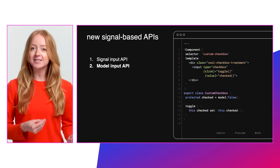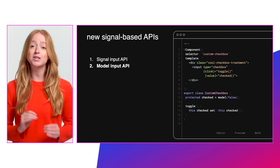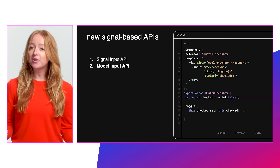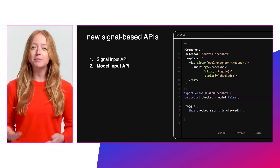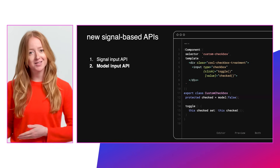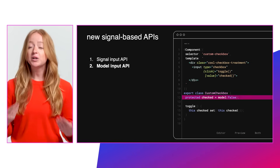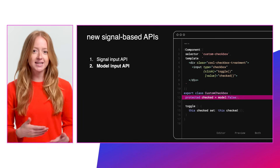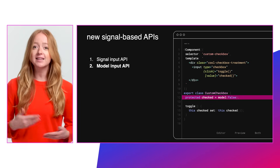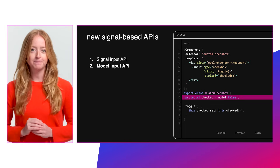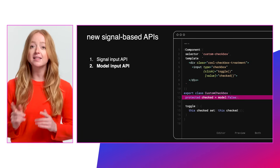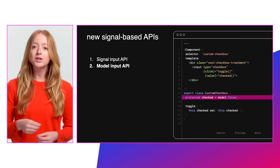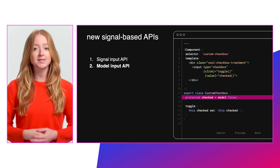To help developers have a better time keeping data in sync with two-way binding, there's the new model input API. Model inputs are a special type of input that enable a component to propagate new values back to another component. When creating a component, you can define a model input similarly to how you create a standard input. Both types of inputs allow someone to bind a value into the property. However, model inputs allow the component author to write values into the property, and in other respects, you can use model inputs the same way you use standard inputs.